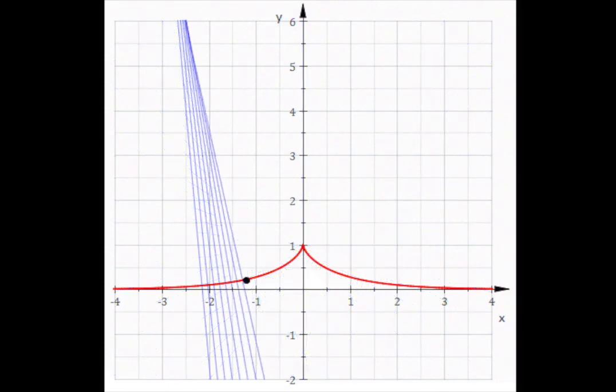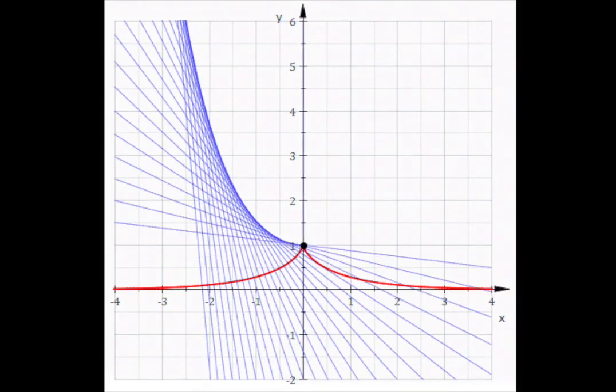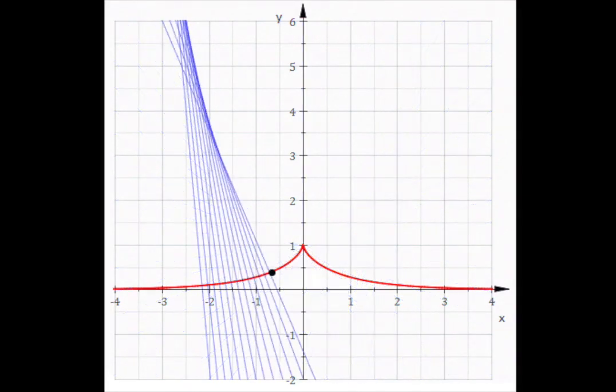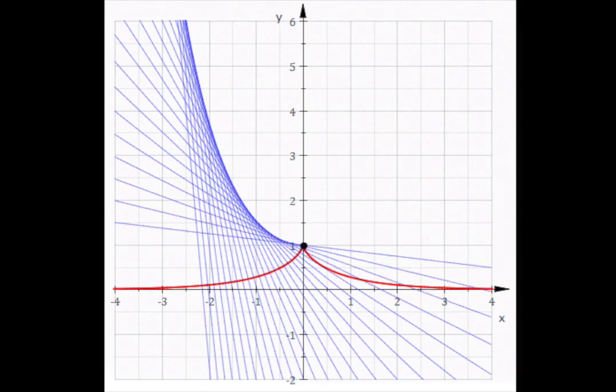It's described by the parametric equations: X equals 1 over the hyperbolic cosine of T, and Y equals T minus the hyperbolic tangent of T.